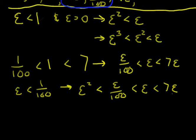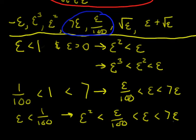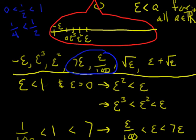So I can come back here and start filling in my line. Epsilon squared is less than epsilon over one hundred, so epsilon over one hundred is somewhere around here. And then seven epsilon is maybe sitting right here. So the inequalities read: negative epsilon, less than zero, less than epsilon cubed, less than epsilon squared, less than epsilon over one hundred, less than epsilon, less than seven epsilon.